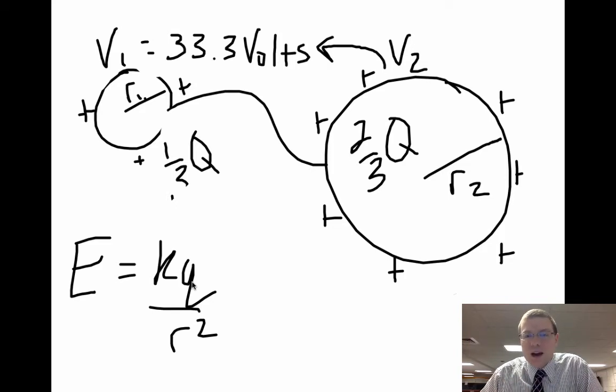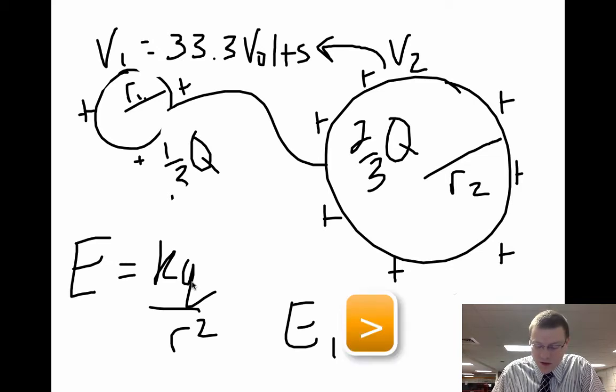So when you do this, sphere two has a larger quantity of charge, but it also has a much larger radius. And when you have a much larger radius squared on the bottom, the electric field strength on sphere one is much greater than the electric field strength on charge two.